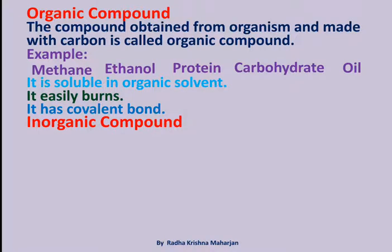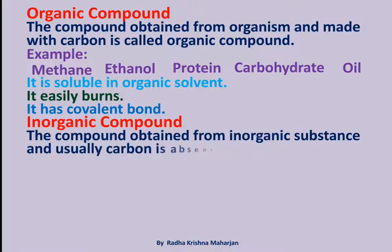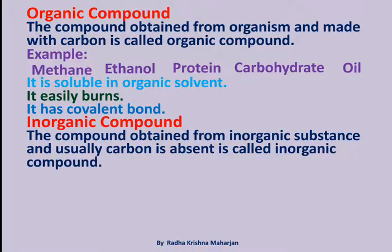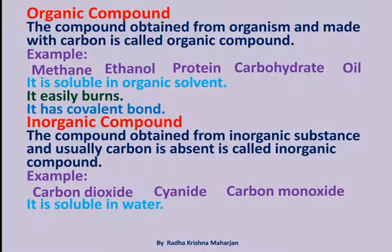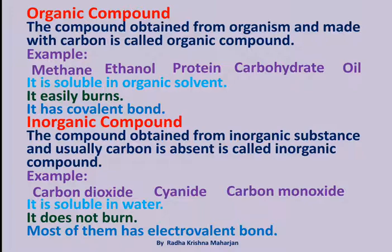Inorganic Compound: The compound obtained from inorganic substances, in which carbon is usually absent, is called an inorganic compound. Examples include carbon dioxide, cyanide, and carbon monoxide. Most of them have electrovalent bonds.